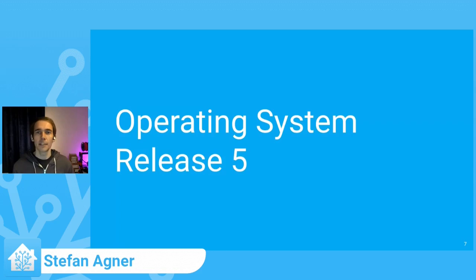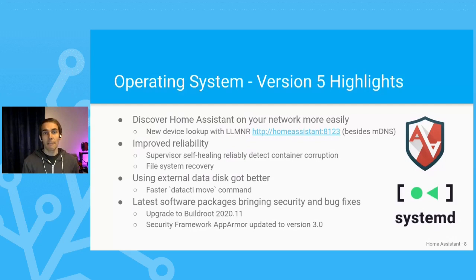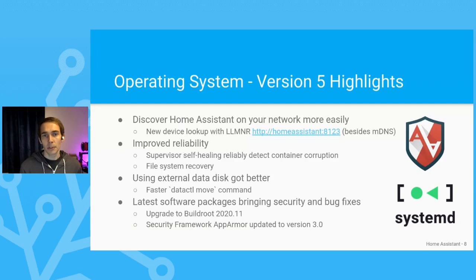Hello, my name is Stefan and I work mainly on the Home Assistant Operating System. Today, we are proud to announce the first stable version of Home Assistant Operating System Release 5. What's new in Release 5? It comes with improved discovery features. So far we had multicast DNS, which allows using homeassistant.local in URLs to find a fresh installation of Home Assistant — but it doesn't work reliably in all environments. LLMNR doesn't need the .local suffix and works particularly well in Windows and modern Linux environments.